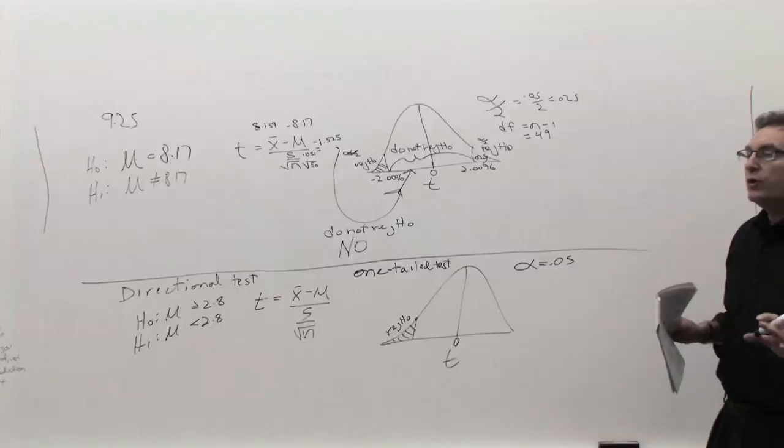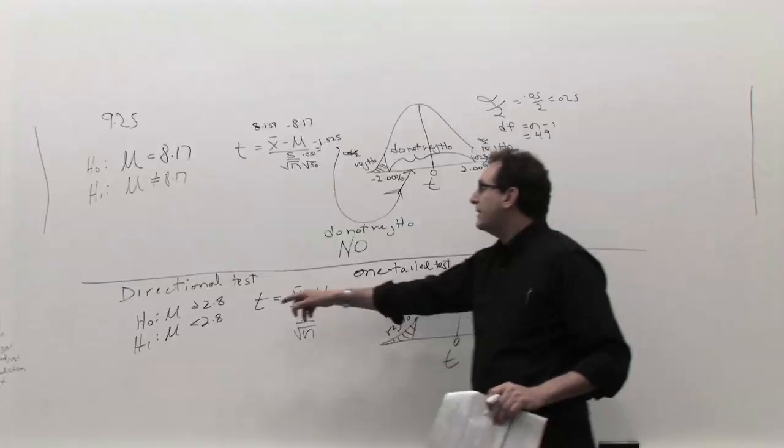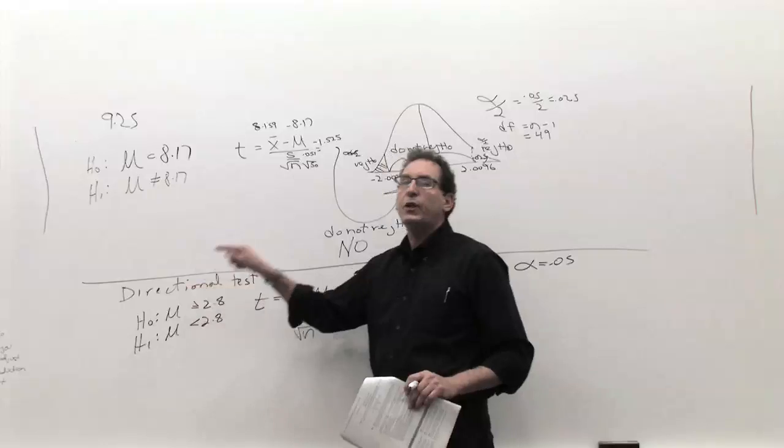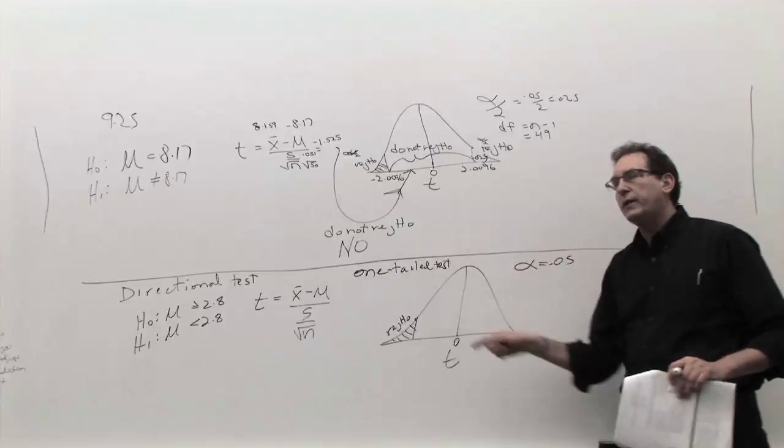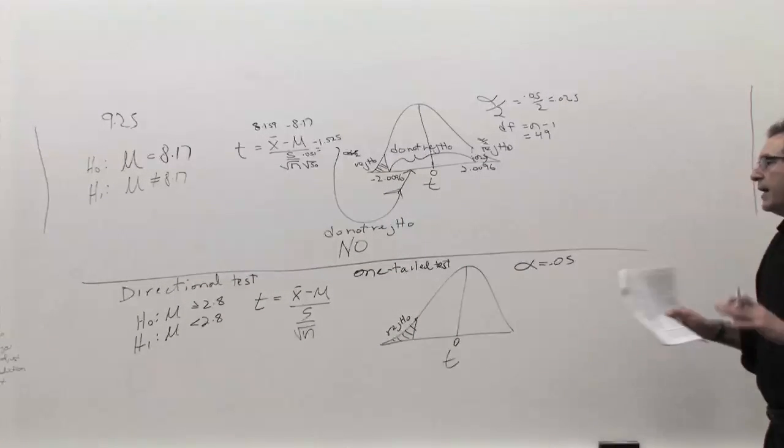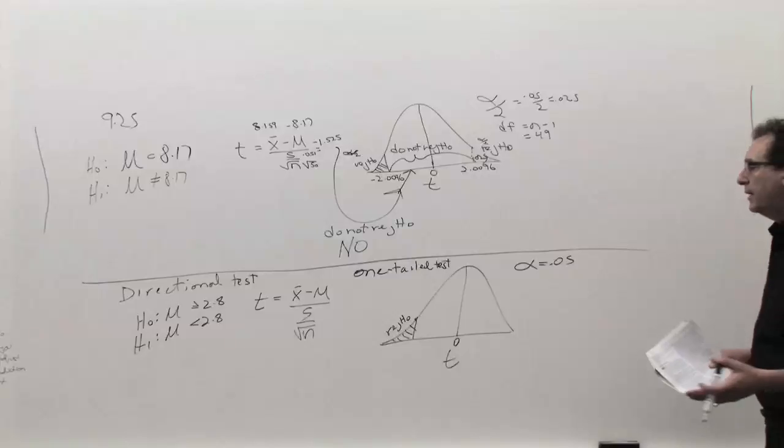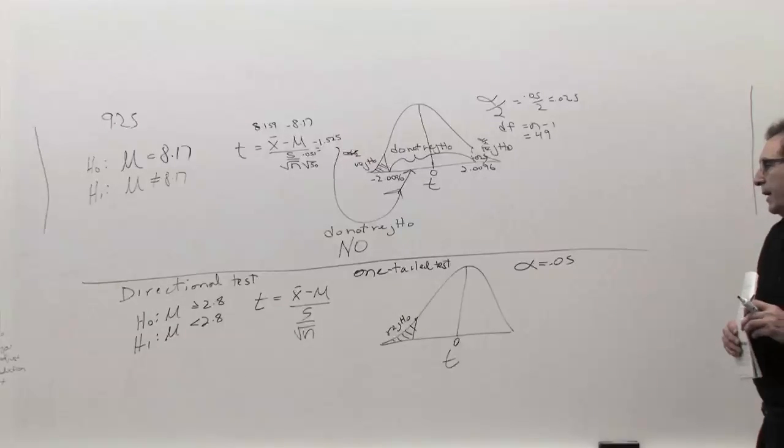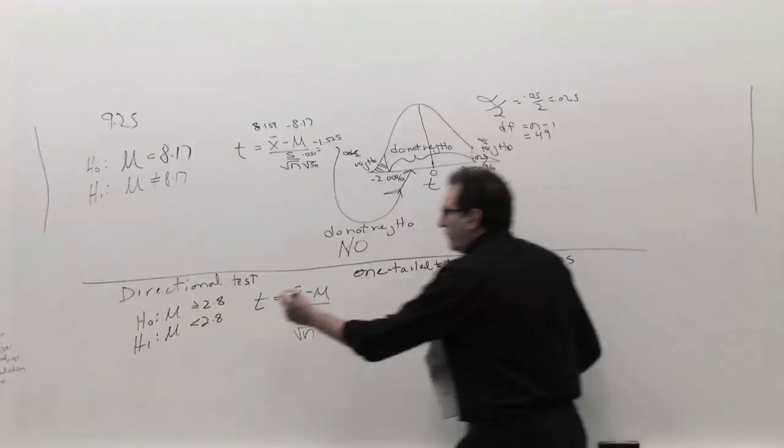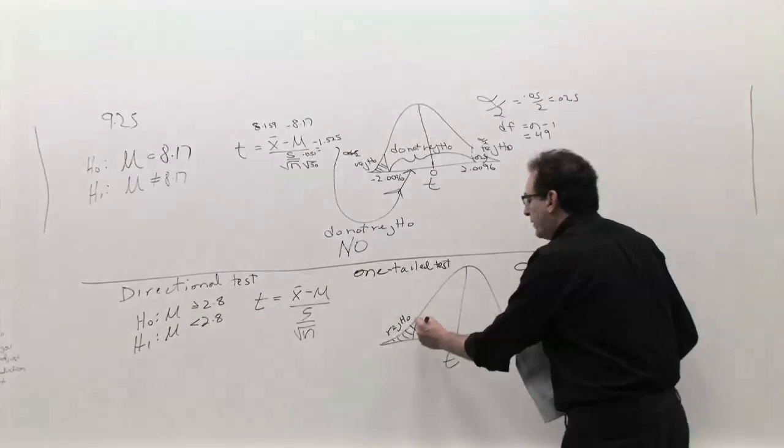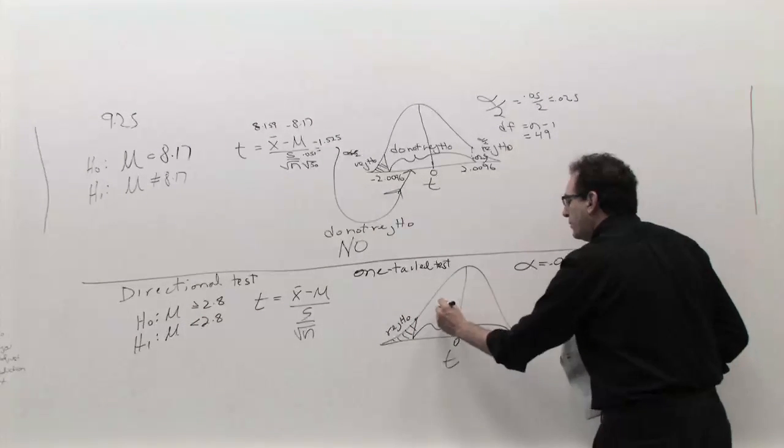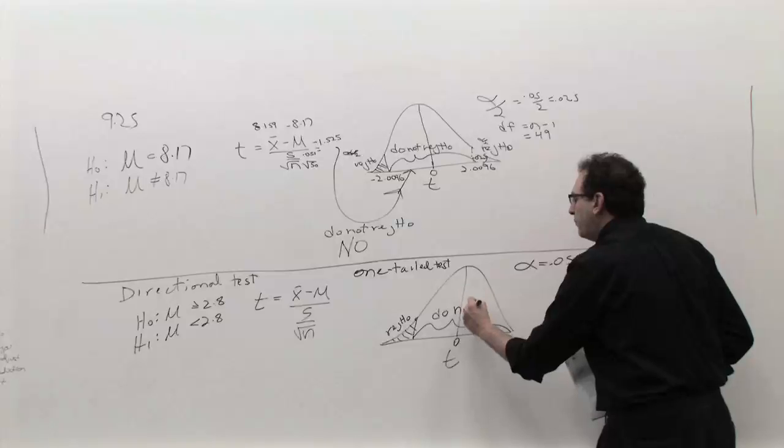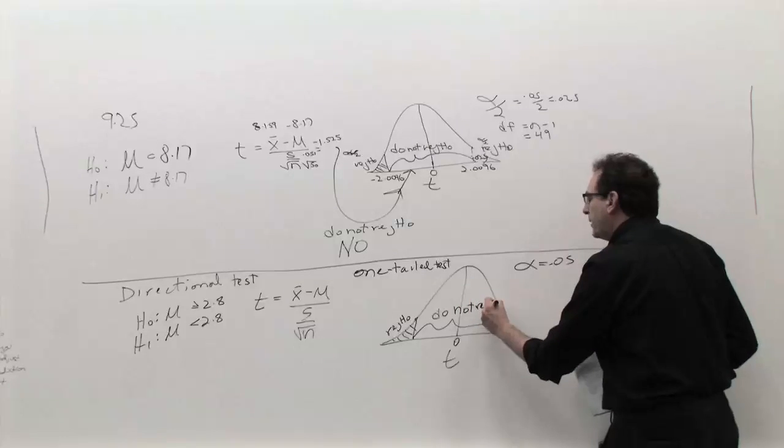Now if you want a shortcut rule for that, you just look at the symbol in the H1. If the symbol is pointing to the left, the rejection region is on the left. If it's pointing to the right, then the rejection region is on the right. And if it's not equal, then it's on both sides. That simple rule applies to every single example of the whole term. So in this case, it's pointing to the left, so we're going to make the rejection region over here. This, of course, is labeled do not reject H0. You're labeling it so when it comes to step number 4, you know exactly what you're supposed to do when you end up in that spot.